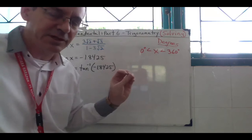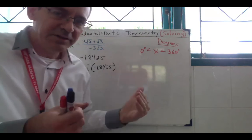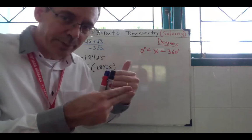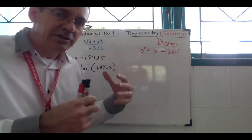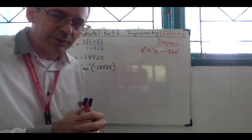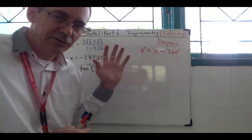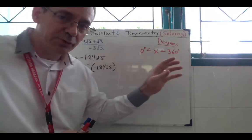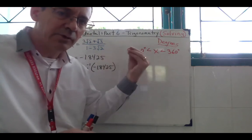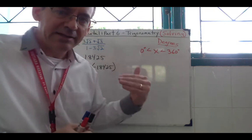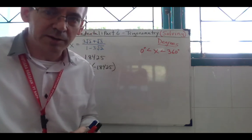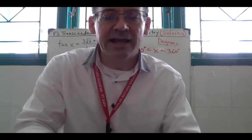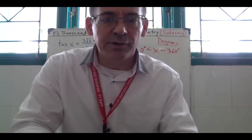If you remember in Part 5, we talked about identities. Oftentimes these two question parts — the identities and then the solving — are paired together. So we're going to use the same examples that we covered in Part 5, where we used identities to show or prove something, and then we're going to continue on with the problem solving aspect of it.